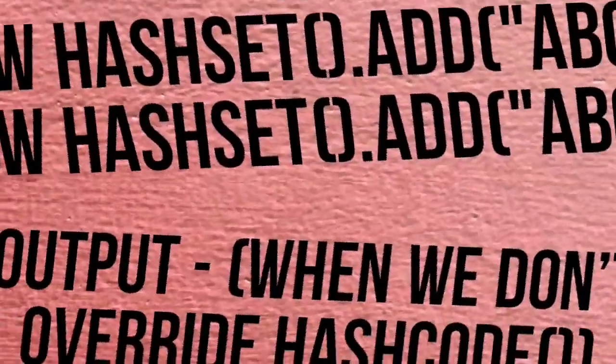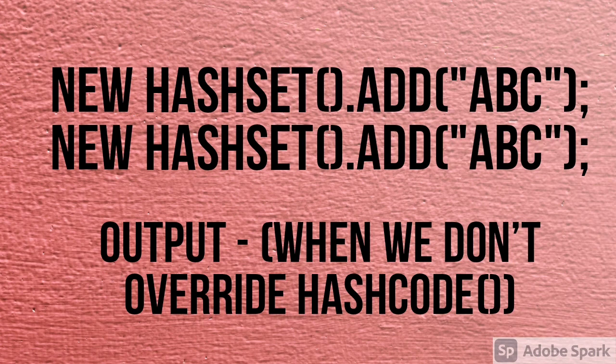The fourth question was a snippet-type programmatical question: if we don't override the hashCode method, what will be the output? Read about the internal working of HashSet and how it behaves when hashCode is not overridden. The guess is that it will add 'abc' both times if we don't override hashCode — check online for more details.